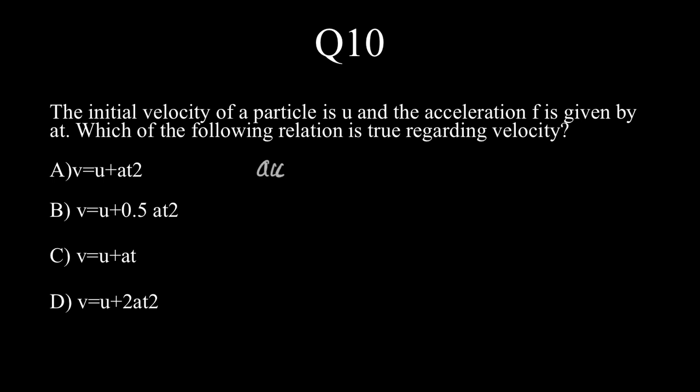Acceleration is equal to f, which is given as at. What is acceleration? Acceleration is dv by dt, so we're given that dv by dt is equal to at, which means dv is equal to at times dt.